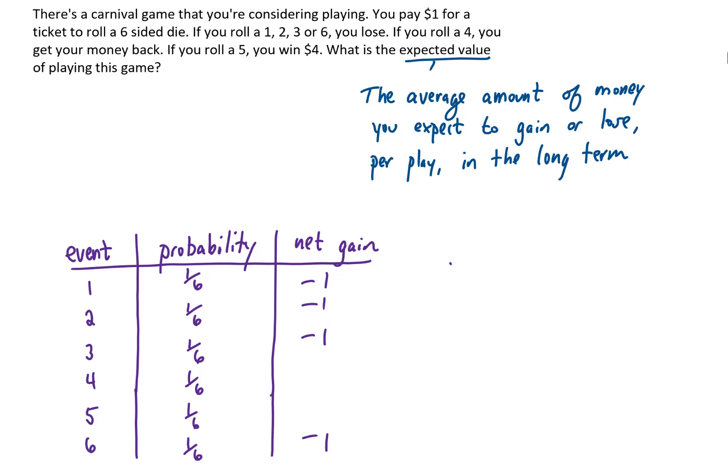If you roll a 4, you'll notice you get your money back, so there's no gain or loss there. And if you roll a 5, you win $4. But notice that you paid $1, so our net gain is actually just $3 there.